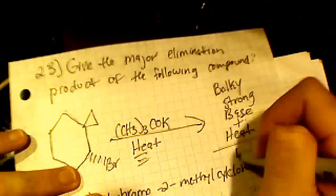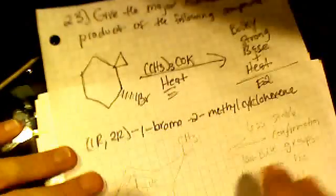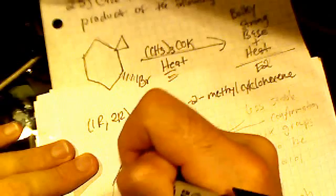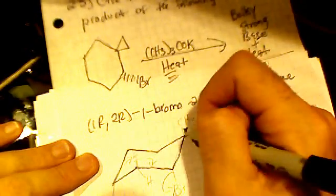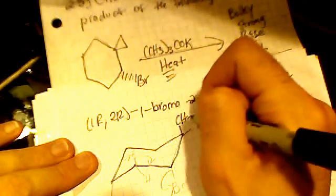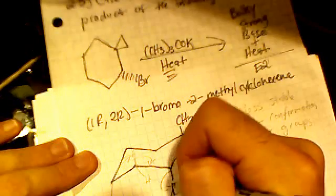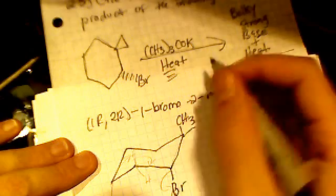When you have a strong base and heat, elimination is likely to happen - E2. When you draw out the molecule, I drew it in the conformation that would allow for the elimination to happen. I put the bromine in the equatorial position.